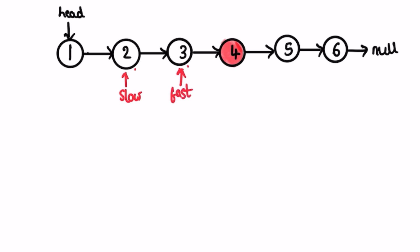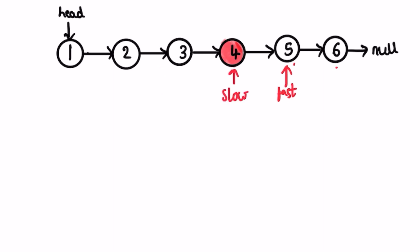We check: fast is not null and fast.next is not null, so we continue. Slow moves to slow.next and fast moves to fast.next.next. Fast is still not null and fast.next is also not null, so we do one more iteration — slow moves to slow.next and fast moves to fast.next.next, reaching the last node. Now fast is not null but fast.next.next is null, so we end the loop and return slow, which is pointing to node four — our expected output.